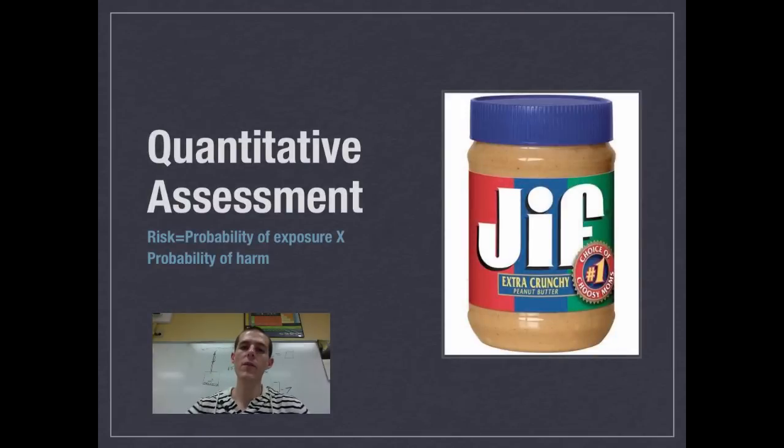So because of the perception problem, the fact that we think things are more dangerous than they actually are, people who are doing risk assessment need to do quantitative assessment, which is actually putting numbers to something to figure out how dangerous is this thing actually. And the equation that you would use to do that is risk is equal to the probability of exposure, so how likely are you to be exposed to a thing, times the probability of harm.